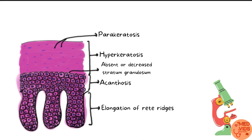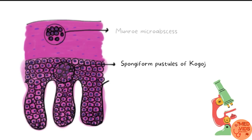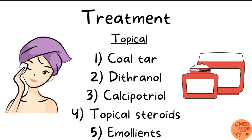The stratum spinosum will be thickened in psoriasis, which is called acanthosis. The elongation of epidermis into the dermis, called rete ridges, will be further elongated in this condition. There are also collections of neutrophils in the layers of skin called micro-abscesses. The micro-abscess present in the stratum corneum is called Munro's micro-abscess — a collection of neutrophils in the stratum corneum. The micro-abscess present in the stratum spinosum is called spongiform pustules of Kogoj.